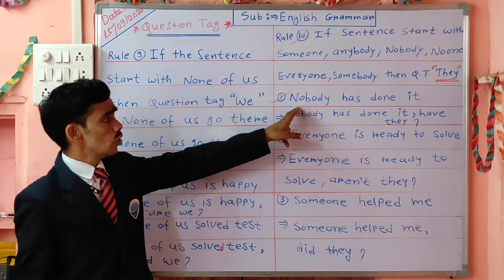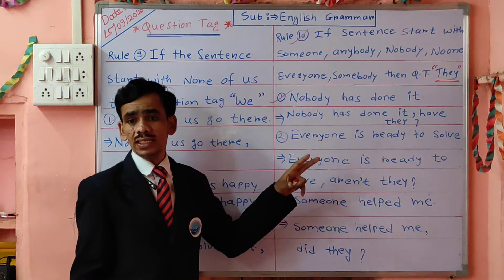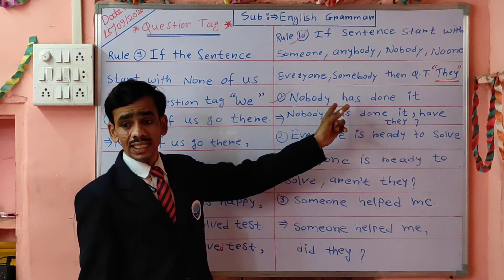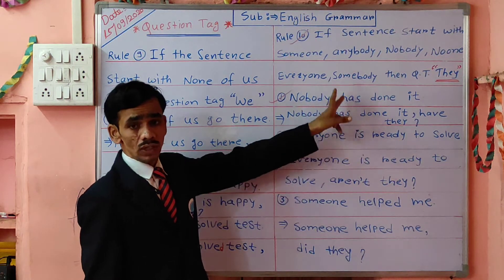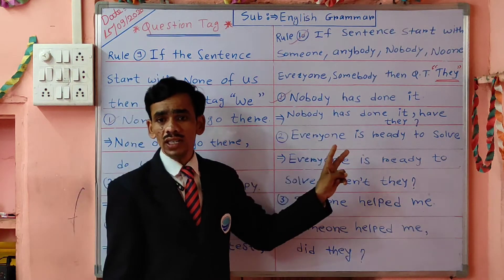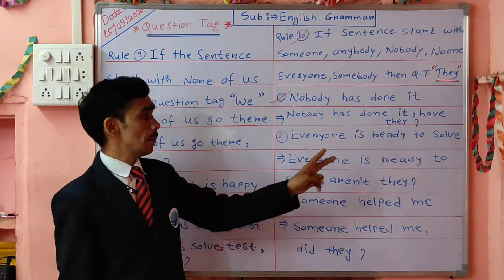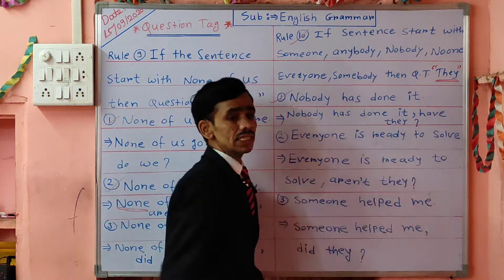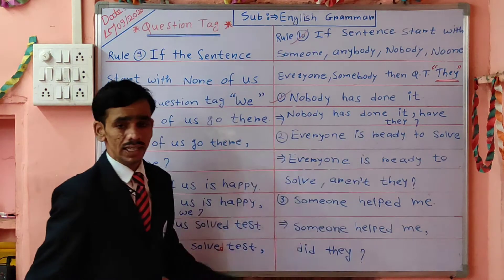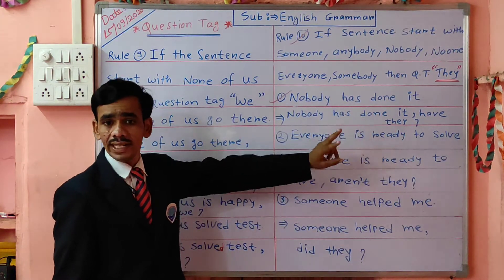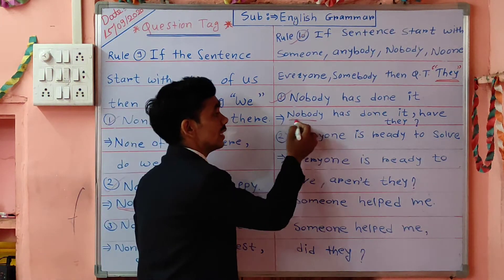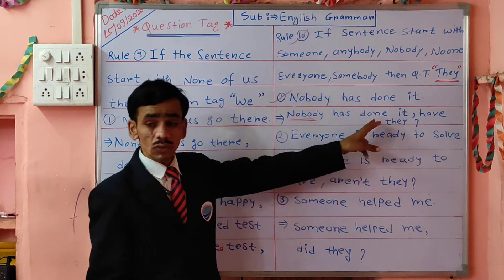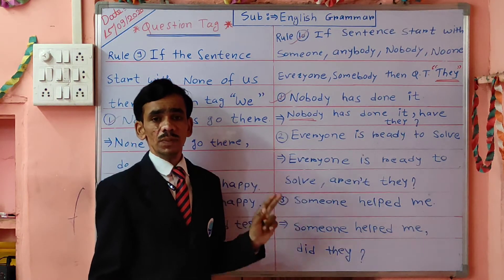For example: 'Nobody has done it.' The question tag is 'have they.' You might think it should be 'has,' but 'they' is compulsory for 'nobody' as per our rule. We use 'has' for singular (he, she, it), but since 'they' is plural, we take 'have' instead of 'has.' And 'nobody' has a negative meaning, so the question tag is positive: 'have they.' Do you understand? Doubts are clear.